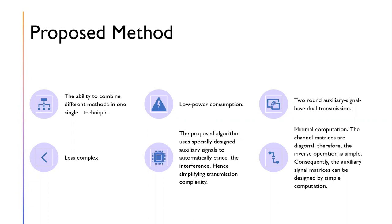The proposed algorithm uses specially designed auxiliary signals to automatically cancel interference and reduce transmission complexity. The auxiliary signals are designed so that when received at the receiver side, they automatically cancel each other and the interference — the user simply receives the signal and decodes it with no extra computation. There are two rounds of signal-based dual transmission with only one antenna active per round. The channel matrices are diagonal, so the inverse operation is simple. The auxiliary signal matrix can be designed by simple computation with no extra processing at the transmitter side either.